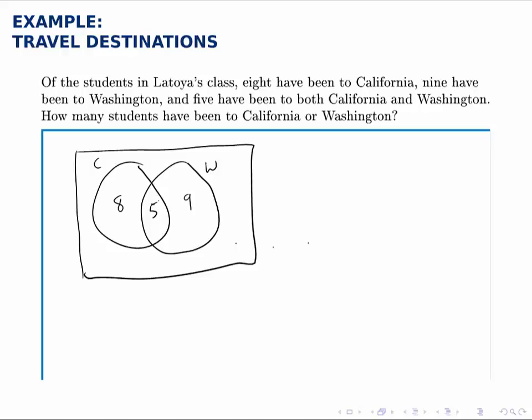The problem is, that when we say that eight have been to California, we mean there's a total of eight in this left-hand circle. And when we say nine have been to Washington, we mean there's a total of nine in the right circle. Which is not what we have right now. So this is wrong.